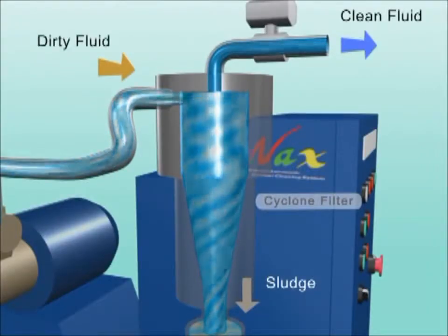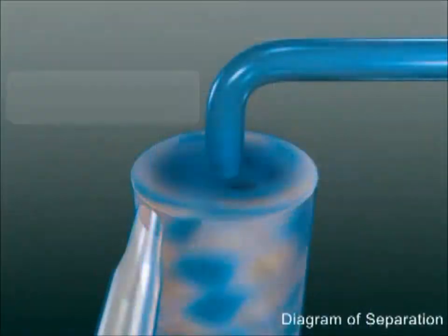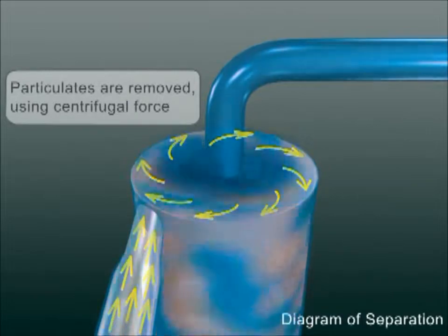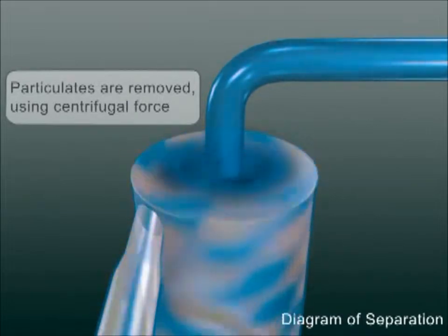Sludge within the dirty fluid is fed by a pump and driven to the outer side of the cyclone filter by centrifugal force, and the clean fluid without sludge is then extracted from the central section of the filter.